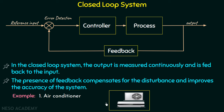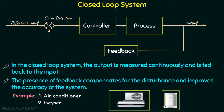We can have one more example of a geyser. A geyser is a water heater where we can set the desired temperature. It continuously monitors the temperature of the water inside and turns off and starts over again in order to maintain the desired temperature. Whenever the desired temperature is achieved, the geyser turns off, and after some time when the temperature decreases, it starts over again to maintain the temperature.